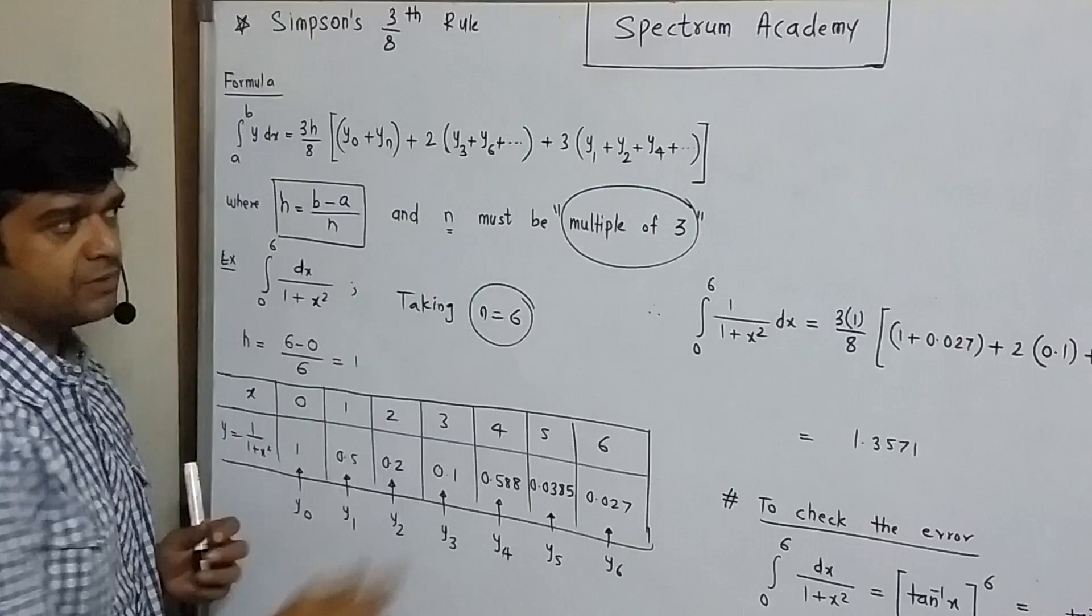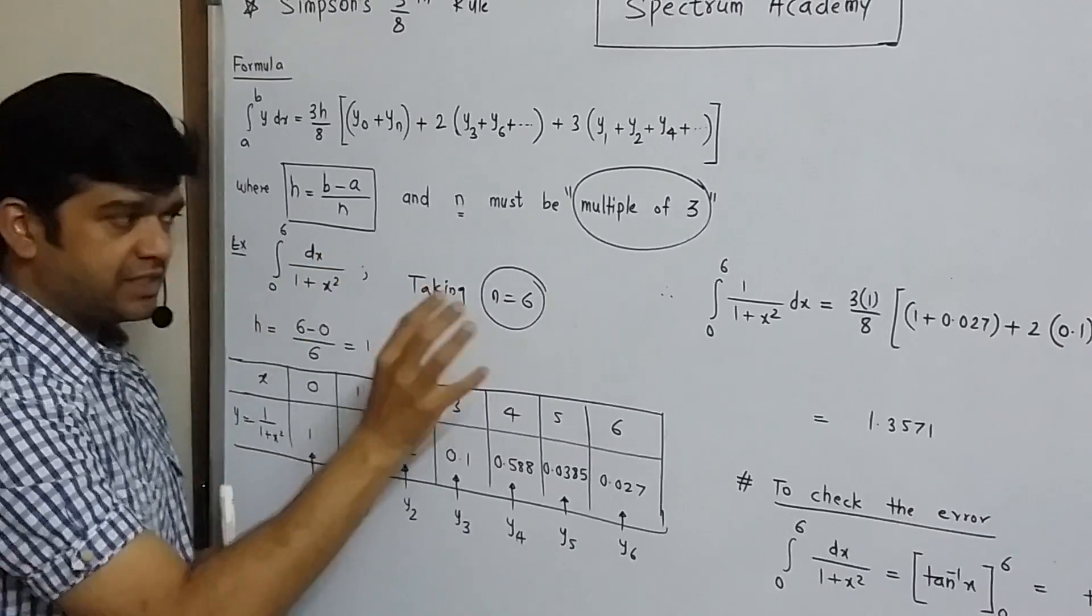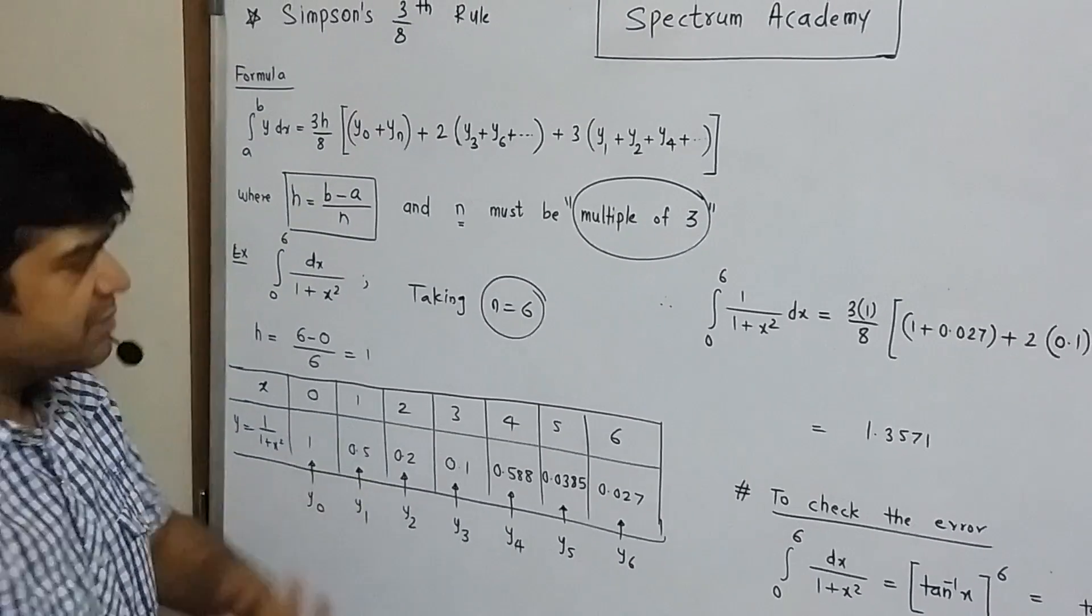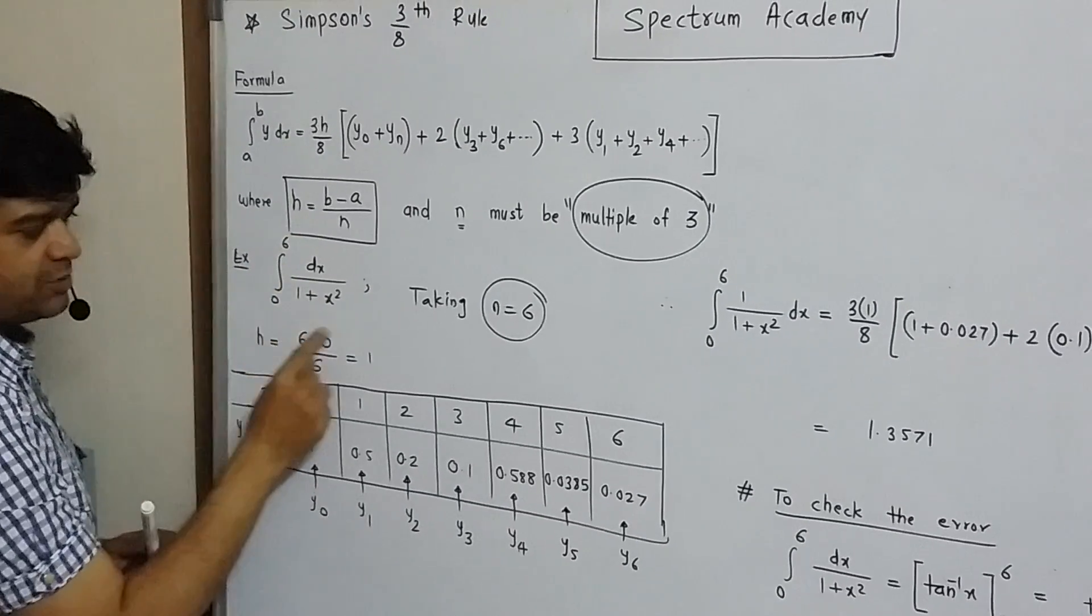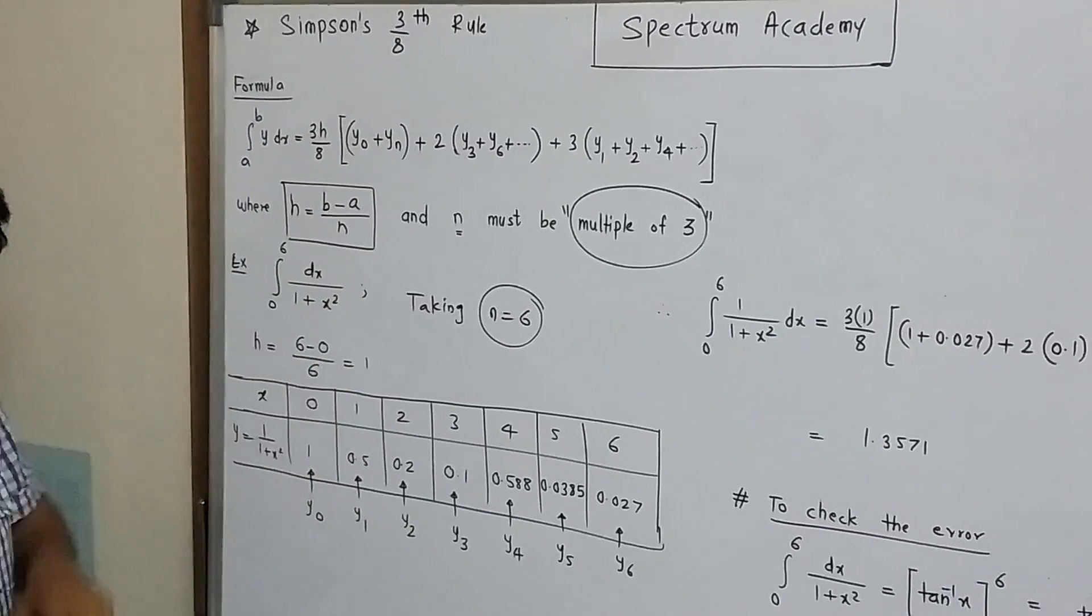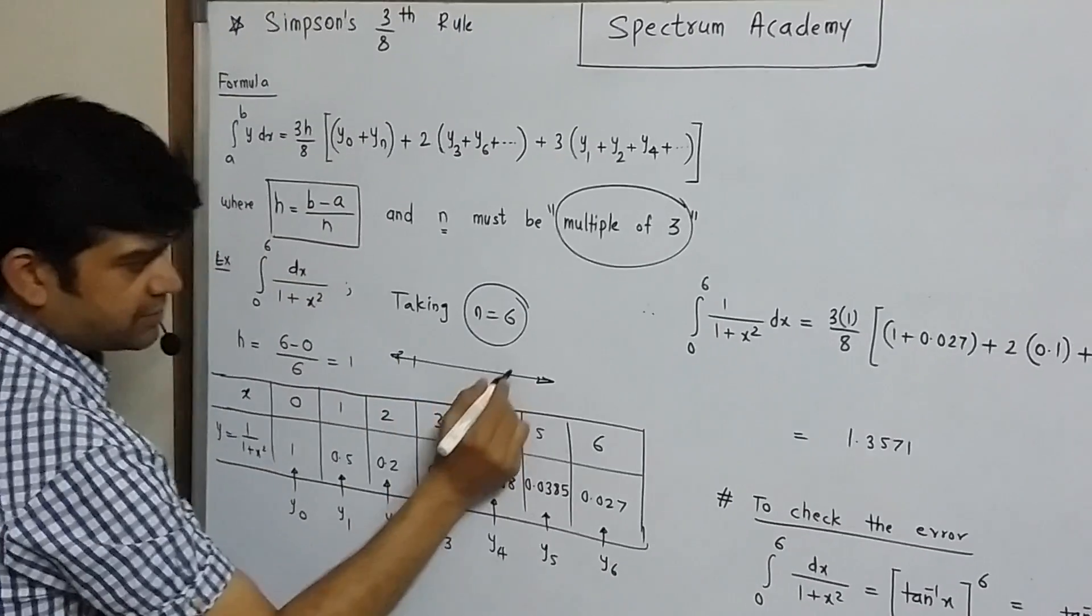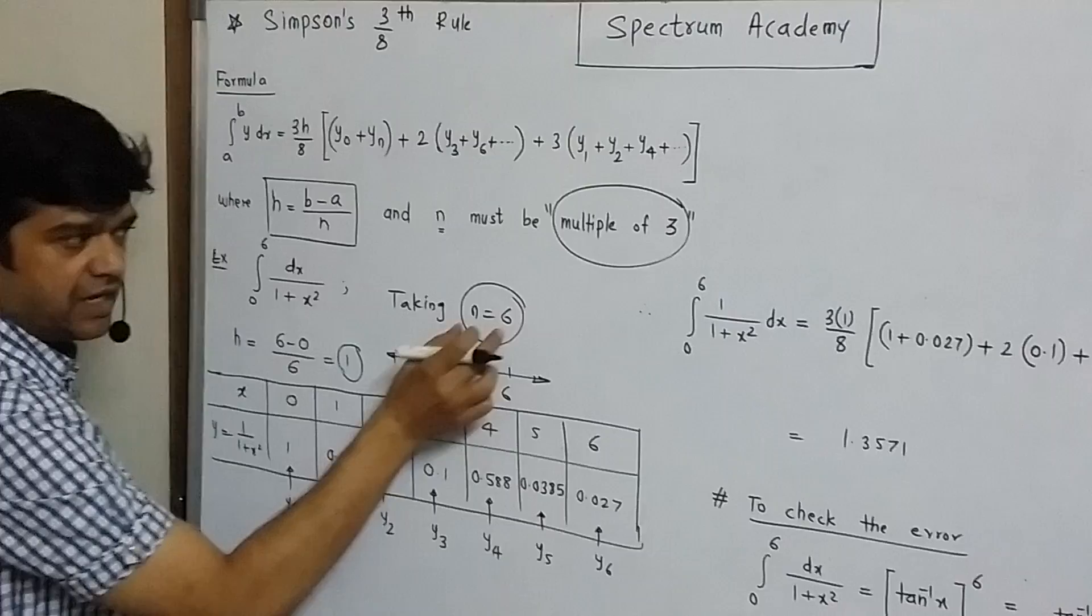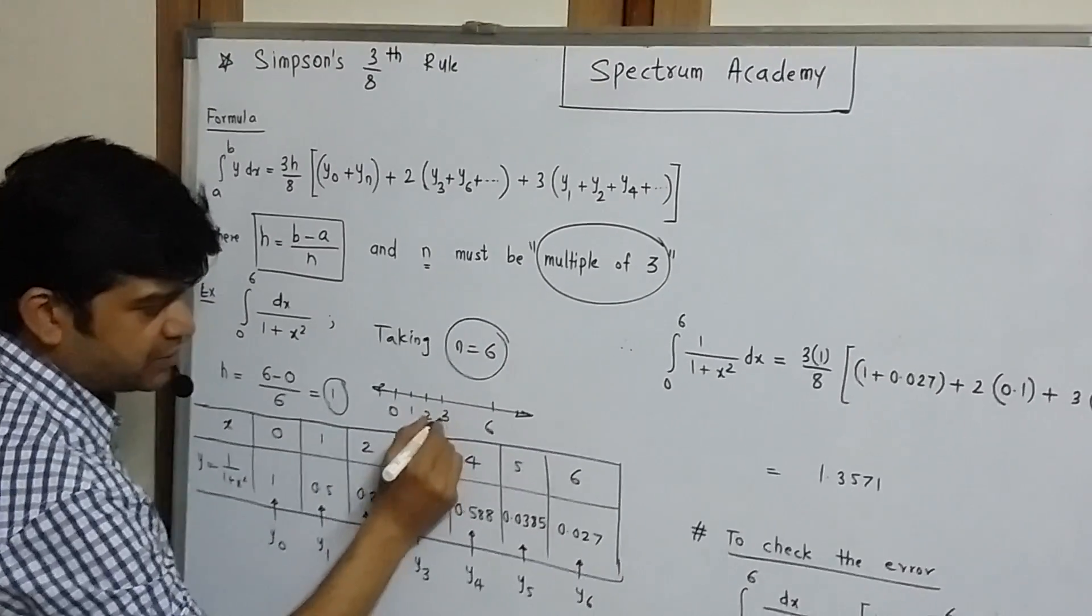Sometimes in problems they don't give this n. So n you have to take which should be multiple of 3. So generally we settle for n equal to 6 which gives us reasonable estimate. So h will be b minus a, that is 6 minus 0 divided by 6. So h value is 1. So the total interval here is 0 to 6 and width of each interval is 1. So it will be 0 to 1, 1 to 2, 2 to 3 and so on.